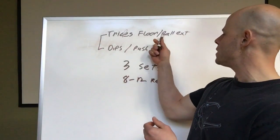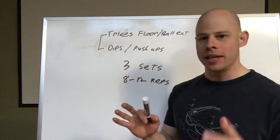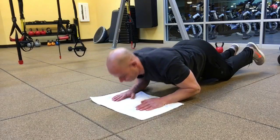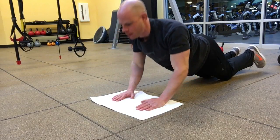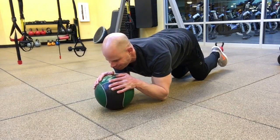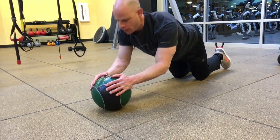Triceps floor or medicine ball extension. I like to do this on the floor because it has a lot of adjustability where you either press into the floor or use a medicine ball, which gives a nice angle to the wrists. The elbows come all the way down to the floor and then back up.